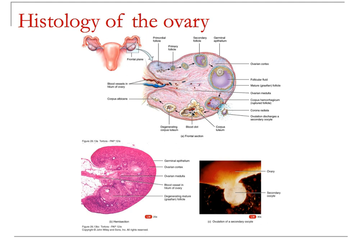Should fertilization not happen, the corpus luteum begins to degenerate and becomes what is called the corpus albicans. Now this is a perfect cartoon, and in lab if you're fortunate enough to get a cat uterus with cat ovaries, you'll be able to see all of these structures. If you get the human cadaver, you probably won't be able to see much of this because it's much harder.